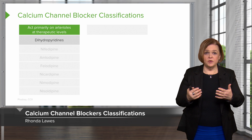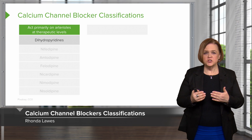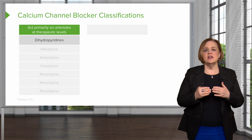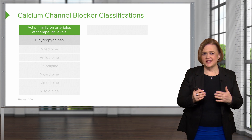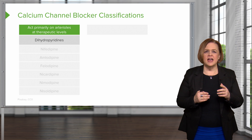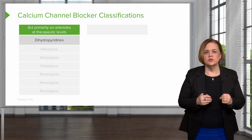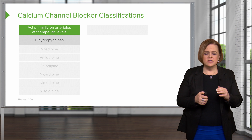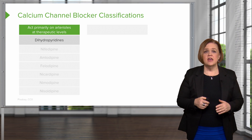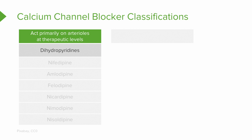In the calcium channel blocker family we have several different subfamilies, because not all calcium channel blockers have the same exact actions. This group, the dihydropyridines, acts primarily on the arterioles at therapeutic levels — remember from our blood pressure video those are like the control valves. Here's a list of the names that fall under that category. By this group of drugs, put a big capital A to remind you that they act just on the arterioles at therapeutic levels.